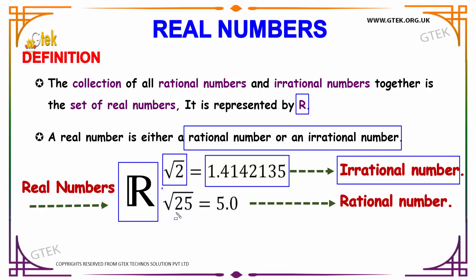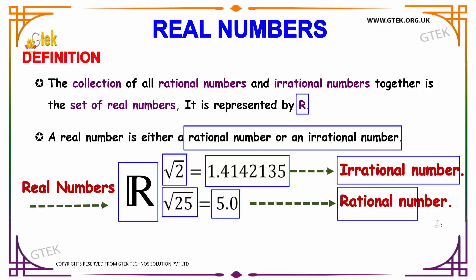We have another example: root 25, which is 5. So this is terminated — it ends. This is an example of a rational number.